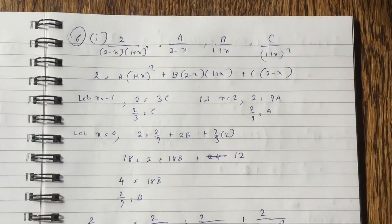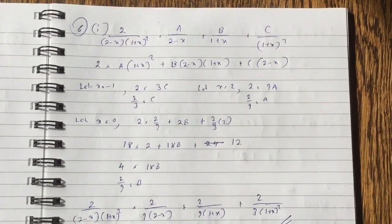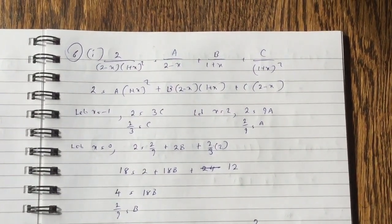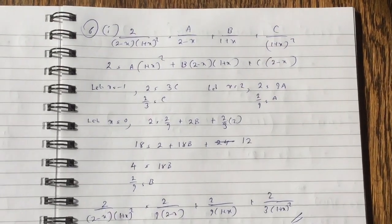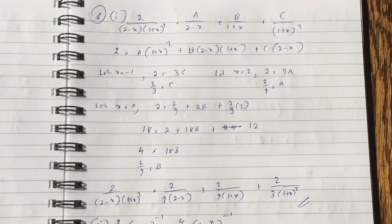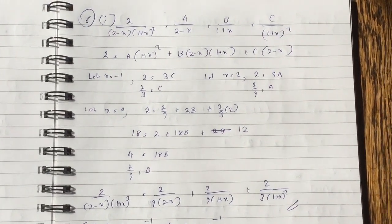Now, we go to the last question. It's quite long, but it's not difficult. So we need to do partial fractions for this fraction. 2 over 2 minus x, 1 plus x squared equals to a over 2 minus x plus b over 1 plus x plus c over 1 plus x squared. So we get 2 equals a 1 plus x squared plus b 2 minus x, 1 plus x plus c 2 minus x.